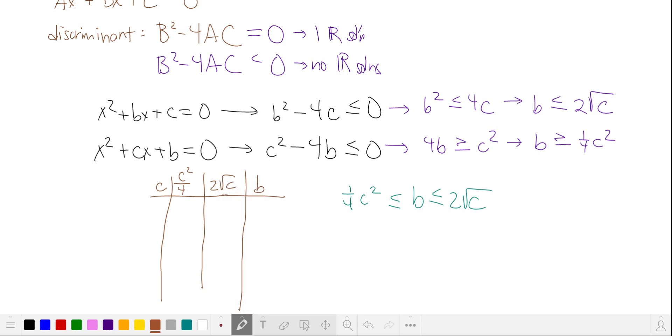So c is a positive integer, so we'll start with 1. That means c squared over 4 is 1 fourth. 2 times the square root of c is 2. So b is an integer between 1 fourth and 2, so that would be 1 and 2. Let's try c is equal to 2. c squared over 4 is 1. 2 times the square root of c, that's approximately 2 times 1.4 or 2.8. So we're looking for integers between 1 and 2.8 inclusive. So again, we have 1 and 2.